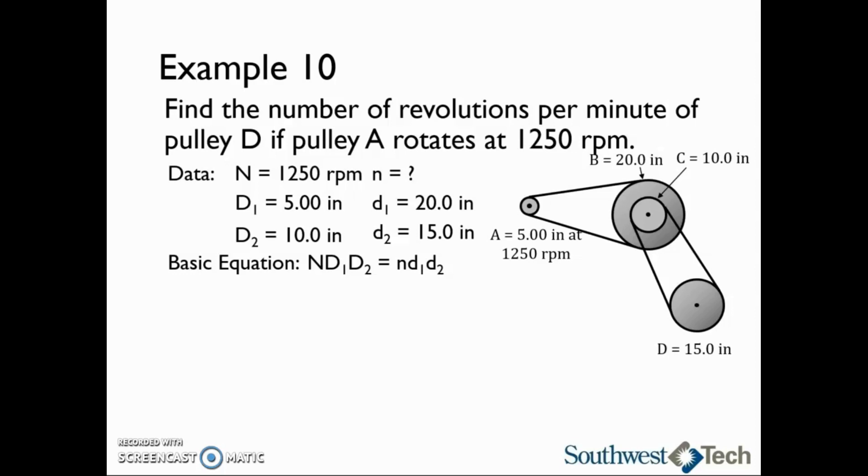We need to rearrange the basic equation in terms of n, so we will divide both sides by lowercase d1 times lowercase d2. This gives us a working equation of lowercase n equals capital N times capital D1 times capital D2 divided by lowercase d1 times lowercase d2.